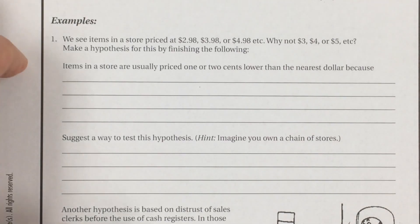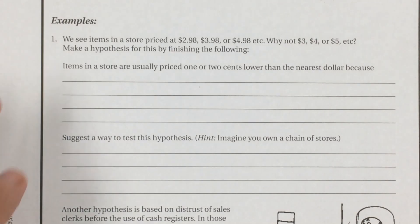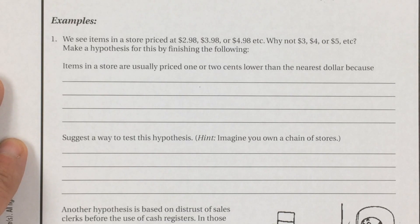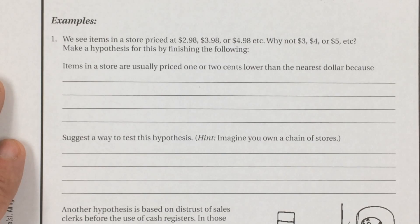Okay, we're back. If I think that it's $3 something, I'm more likely to pay it than if I think it's $4 something, even if it's only two cents less. So it's almost like a psychological trick, probably. I don't know what you said, but that's a likely hypothesis — there are probably lots of things you came up with.